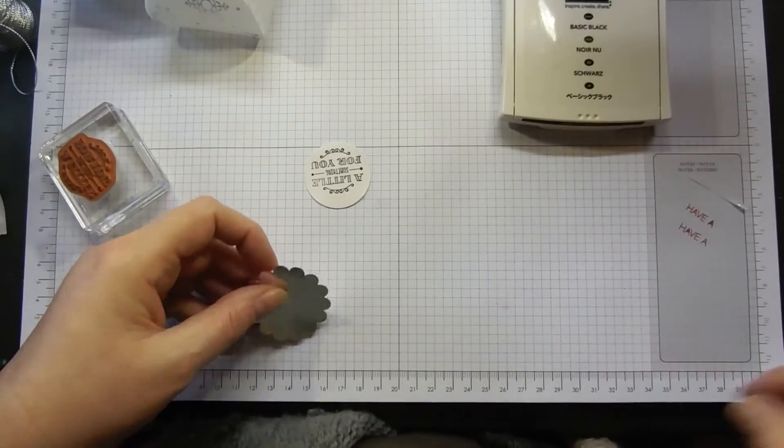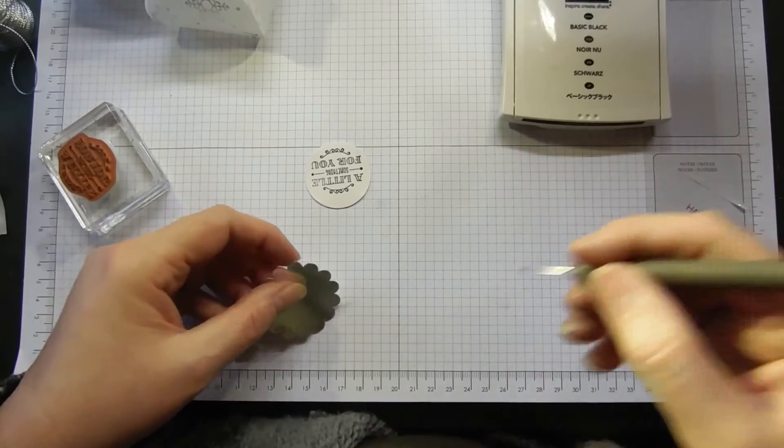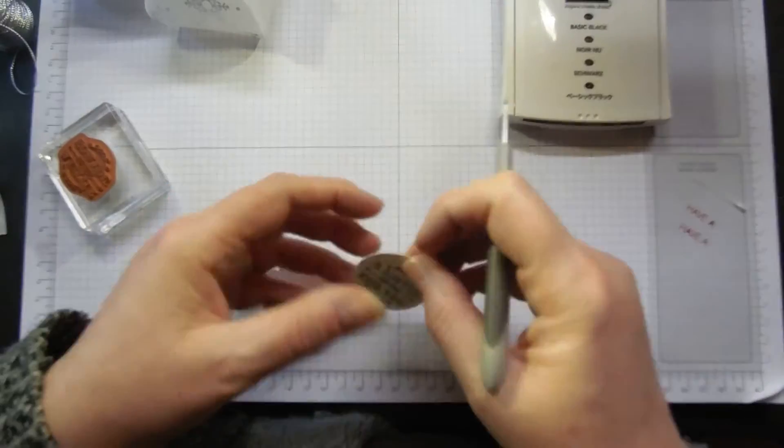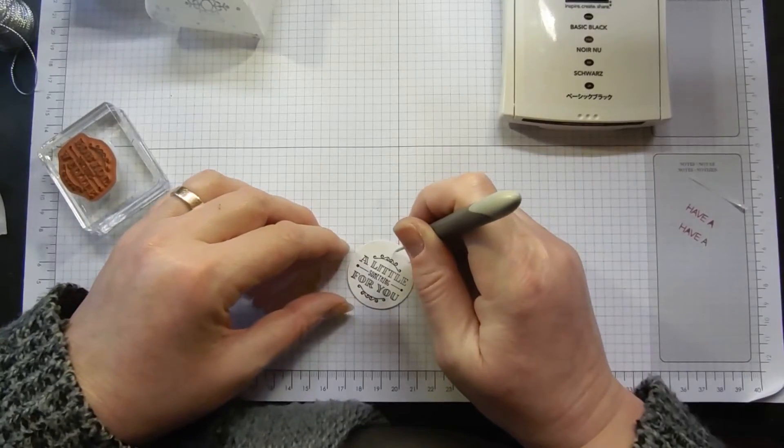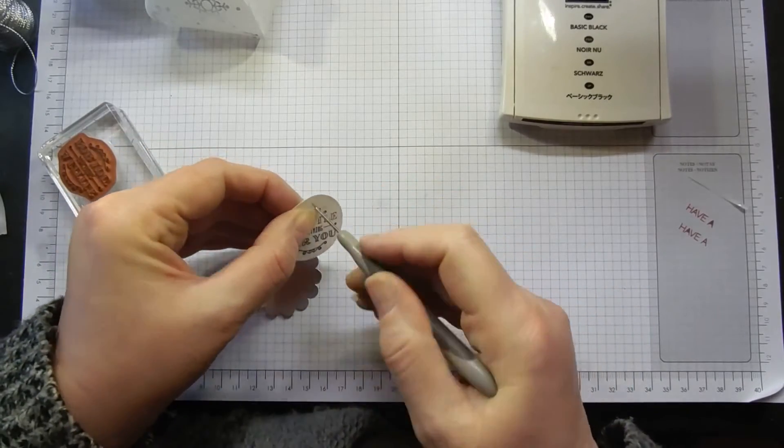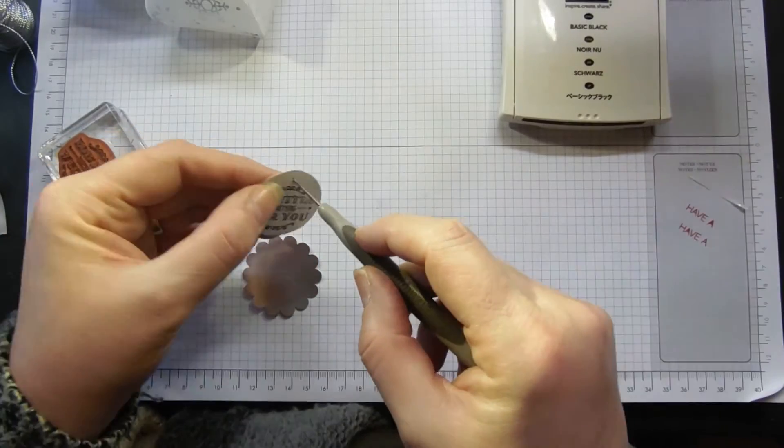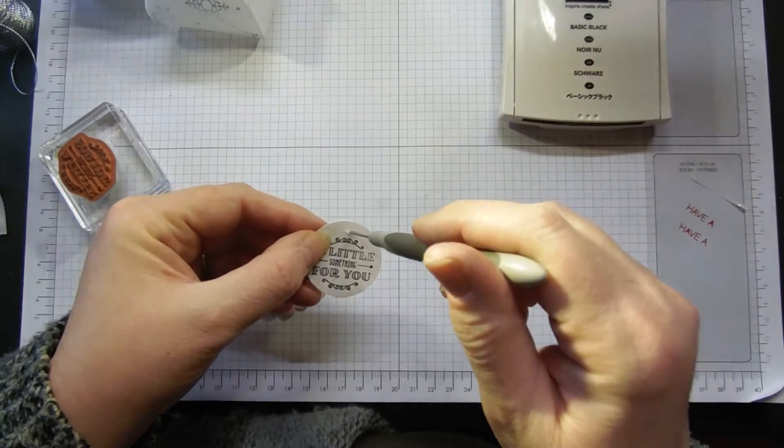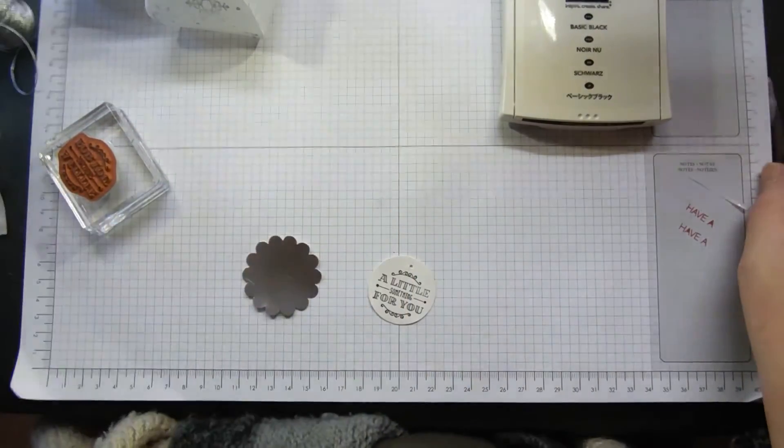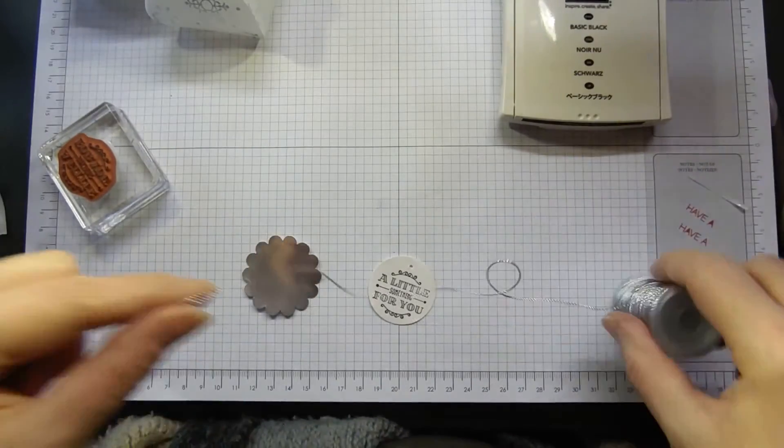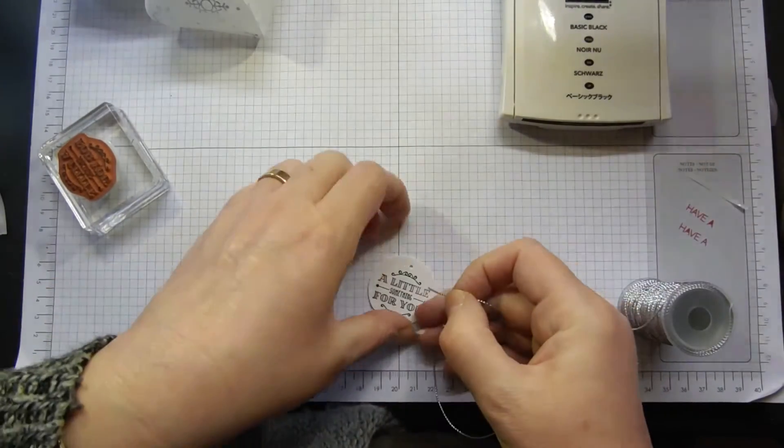Then I have matted that onto a piece of silver foil cardstock, and I'm using the one and three-quarter inch scallop circle punch. You just want to make a little hole in the top, the stamped one. Through there, thread a bit of silver cording trim.